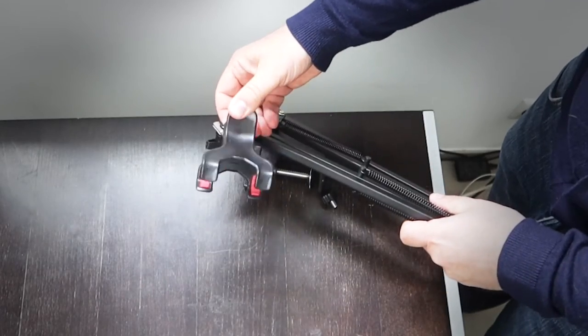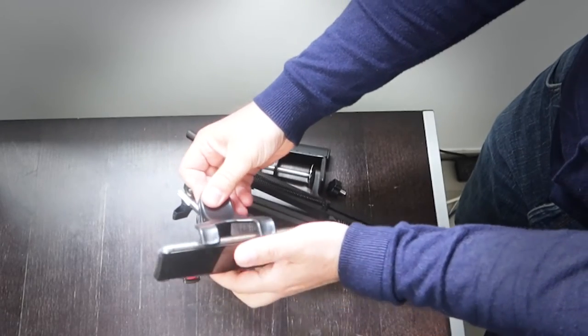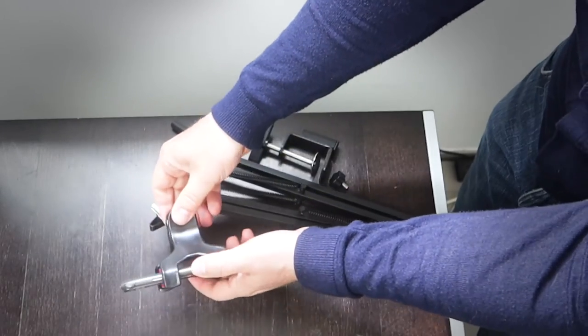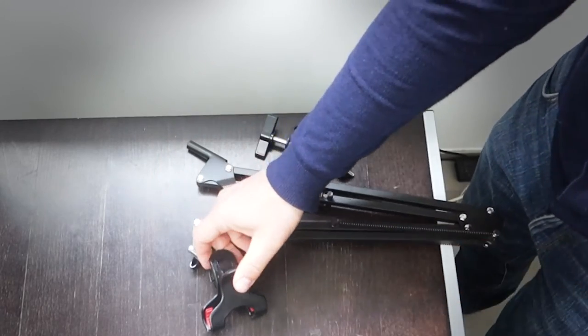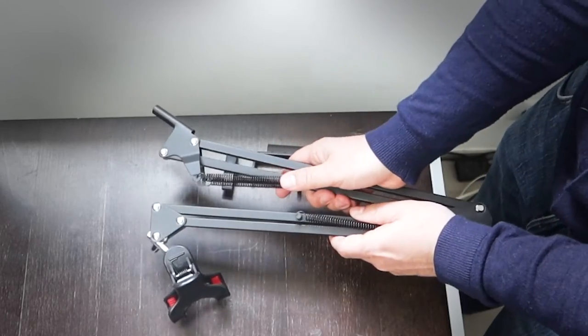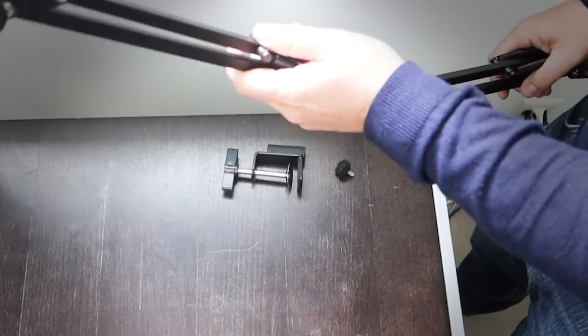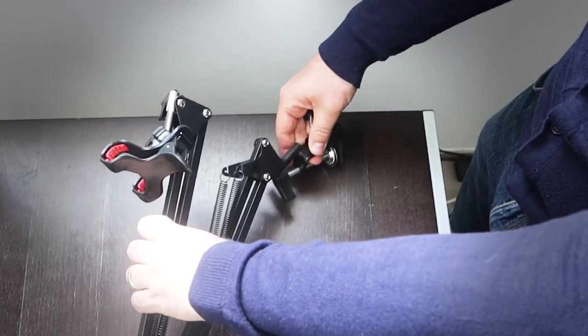This is where you can place the phone. I remove the phone. This is the clamp to fix it to the table. It should go this way here.